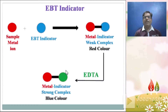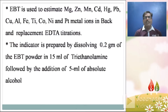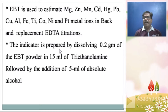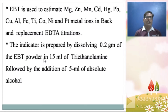EBT is used to estimate magnesium, zinc, manganese, nickel, and platinum metal ions in back and replacement EDTA titrations. The indicator is prepared by dissolving 0.2 gram of EBT powder in 50 ml of triethanolamine followed by the addition of 5 ml of absolute alcohol.